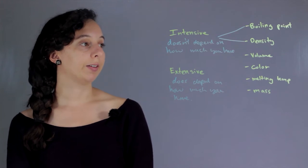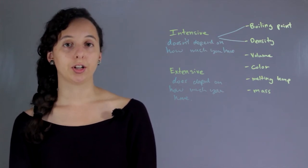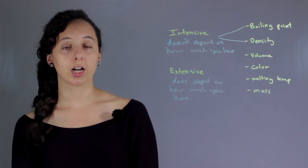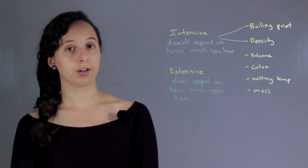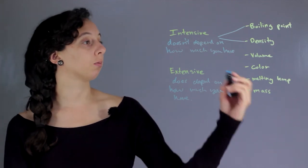Volume. Now you can see what an extensive property looks like. So if I have a cup full of water versus a gallon of water, they're different sizes, they're different volumes. This is an extensive property.